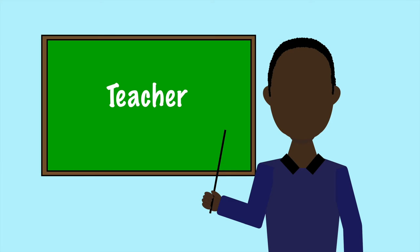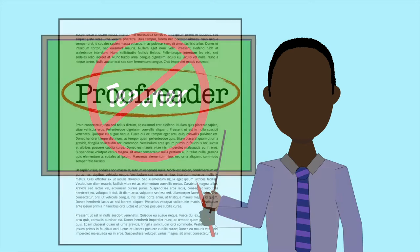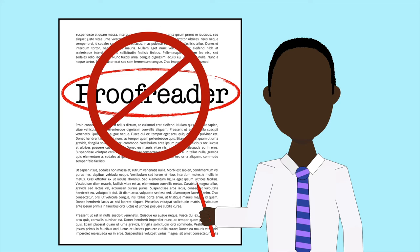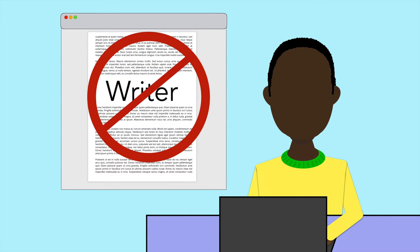First, you are not the teacher. It's not your job to pass judgment on the merits or faults of the text. Similarly, you're not a proofreader — you're not merely looking for typos and other minor problems to fix. Most importantly, you are not the writer. You can make suggestions, but you should not try to revise the text yourself or explain how you would do it differently, or otherwise make decisions for the writer, who is ultimately in charge of what ends up on the page.